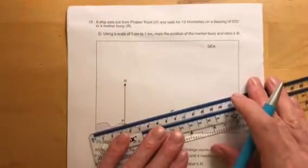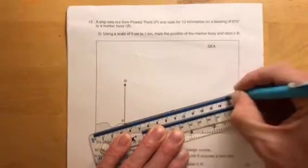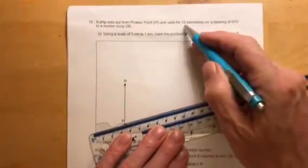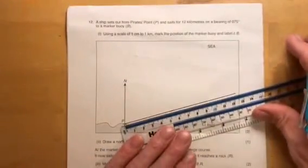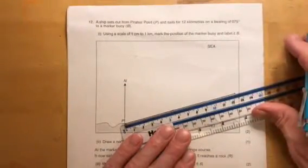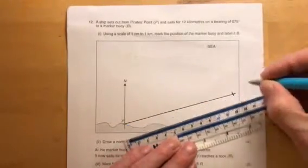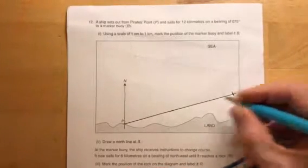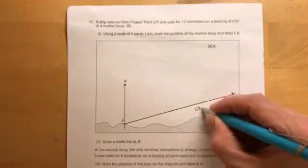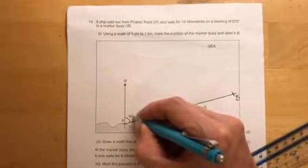At the moment we don't know how far, so we're going to just go as far as we want. Then it's 12 kilometres, 1 centimetre to 1 kilometre, it's nice and easy. Now we're going to measure it, just made it long enough, 12 kilometres. We're going to mark that Marker Buoy B, and we know that's 12 kilometres and that angle is 75 degrees.